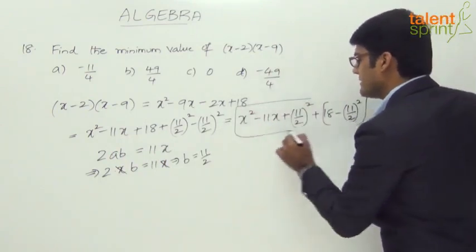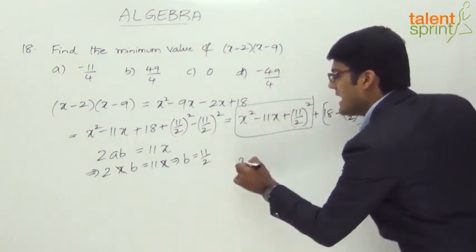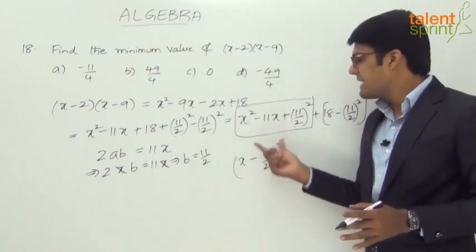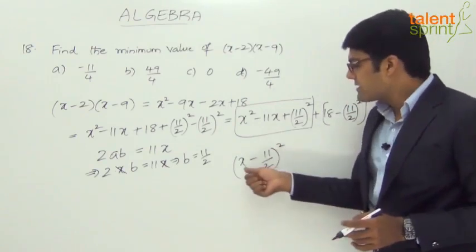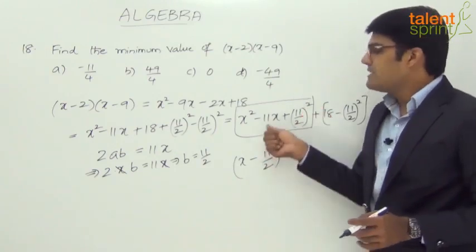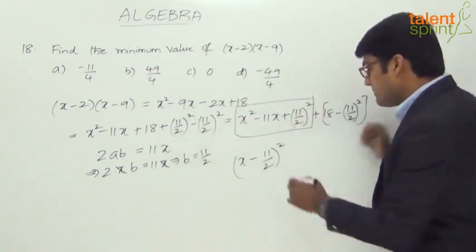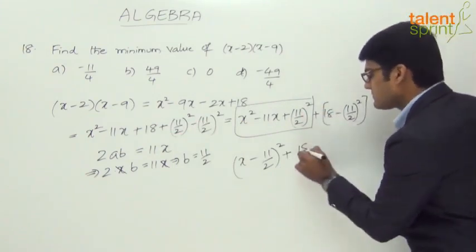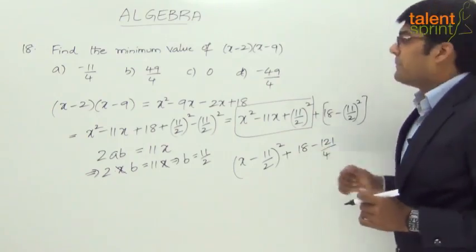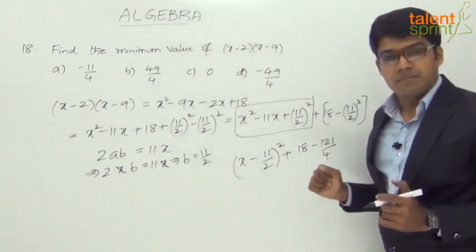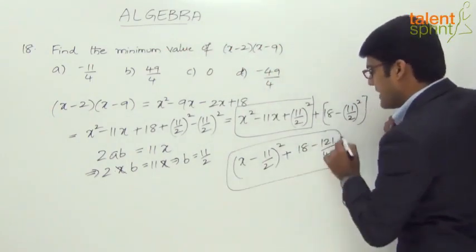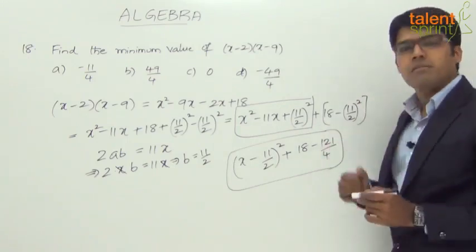Looking at the grouped terms, x squared minus 11x plus (11 by 2) whole square is exactly (x minus 11 by 2) whole square, because expanding that gives x squared plus (11 by 2) squared minus 2ab, and minus 2ab is 11x. The remaining part is 18 minus (11 by 2) whole square, which is 18 minus 121 by 4. So the full expression becomes: (x minus 11 by 2) whole square plus 18 minus 121 by 4.